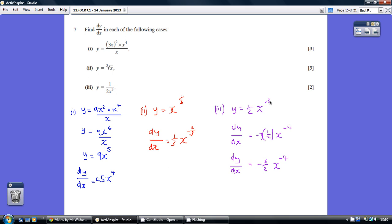Remember that's reducing the power by 1, not adding 1 to the power. Tidying up a bit, minus 3 times a half is minus 3 over 2, so dy/dx equals minus 3 over 2 x to the minus 4.